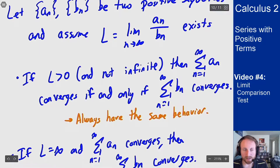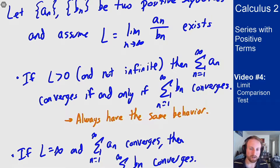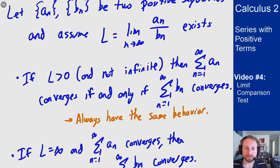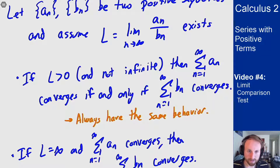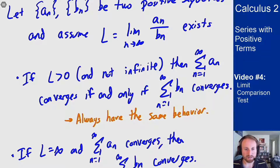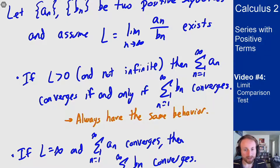If L is infinity, that means b_n is going to zero faster than a_n. Since a_n converges and b_n is going to zero faster — meaning b_n will be smaller — it will also converge. The L equals zero case is the opposite: b_n is going to zero slower than a_n, but since b_n converges, that forces a_n to also converge. You don't need to know much about why it works unless that helps you apply the theorem — you may just need to know how to use it to solve problems.